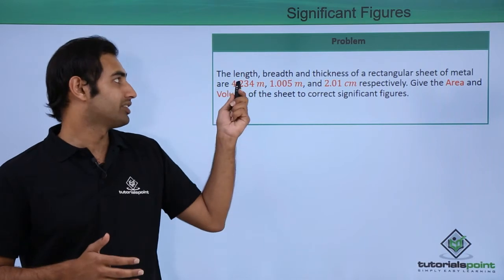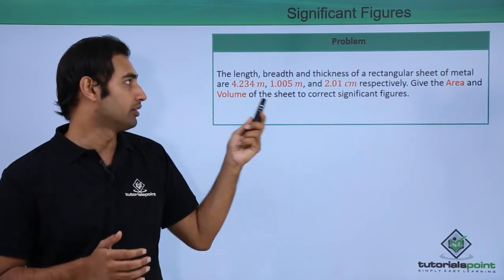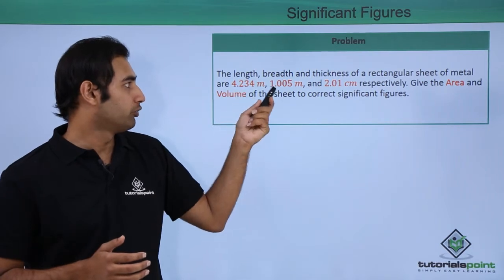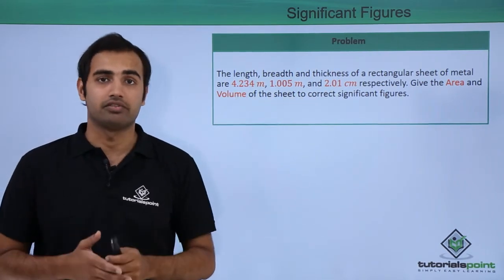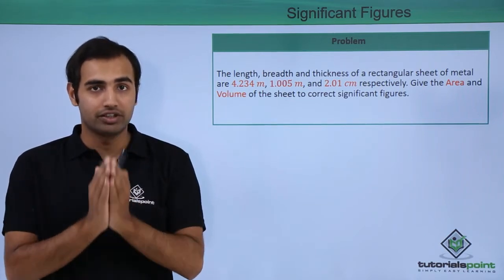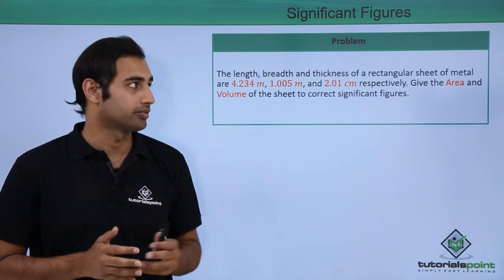Over here we have the question that says the length, breadth and thickness of a rectangular sheet of metal are 4.234, 1.005 meters and 2.01 centimeters respectively. So thickness has been given to us in centimeters, we must keep that in mind when we are solving the question.